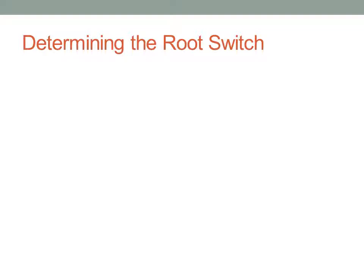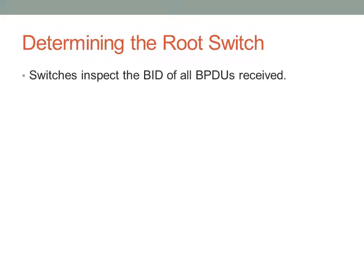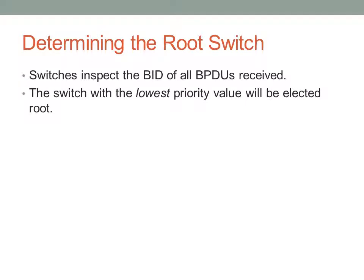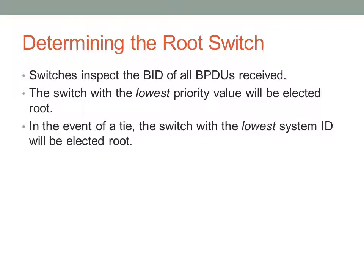First we need to determine the root switch. The root switch is the center of your layer 2 topology — it is the switch that all other switches connect to, and all other switches must find a path back to the root and eliminate any other redundant paths. The switches inspect all BPDUs received and look at the bridge ID. The switch with the lowest priority value is automatically selected as the root switch. If all BPDUs have the same priority, the switch with the lowest system ID — or lowest MAC address in most cases — will be elected as root. In both cases, lower is better.